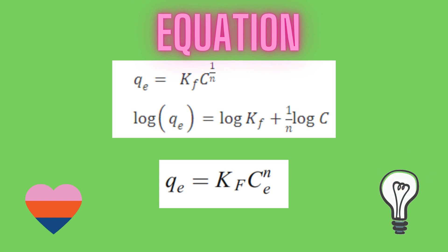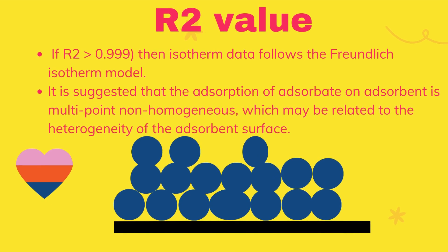Now let us consider the interpretation of this equation. Firstly, let us consider the R² value, or regression coefficient value — this is the primary consideration for adsorption data interpretation. If your data shows an R² value greater than 0.999, then the isotherm data follows the Freundlich isotherm model.